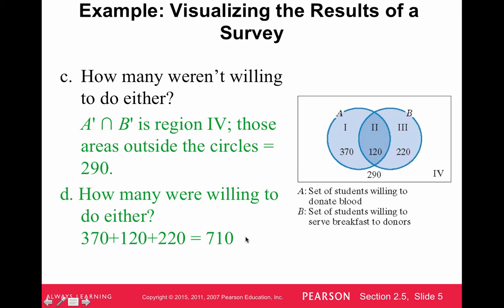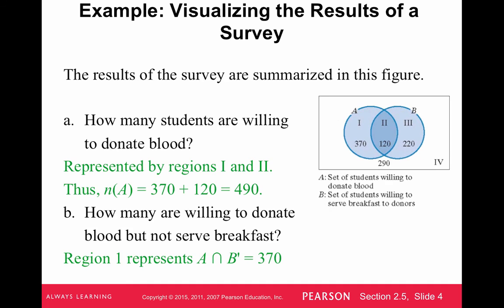Whenever you first get a Venn diagram, understand what the four regions mean: the intersection is both; the left region is set A but not B; the right region is set B but not A; and the number outside is neither A nor B. That really helps answer the questions. Good luck — we'll see you next time.